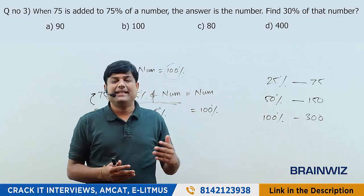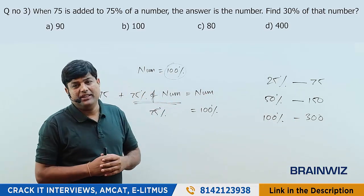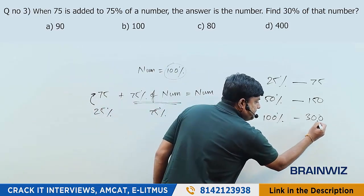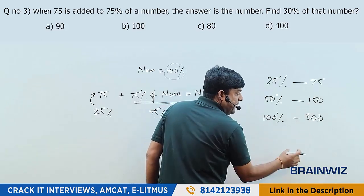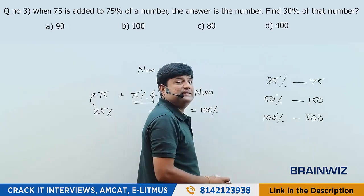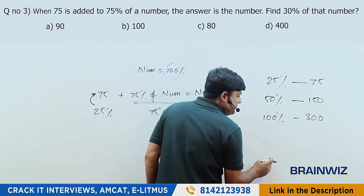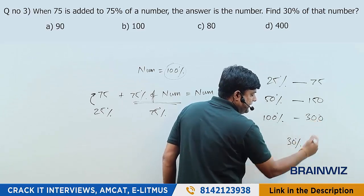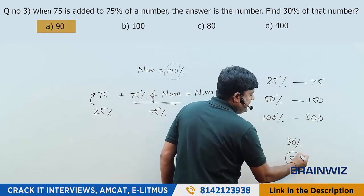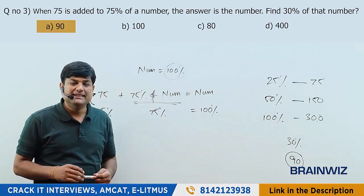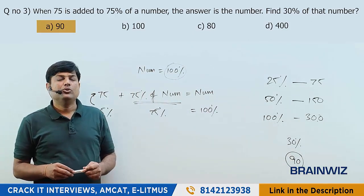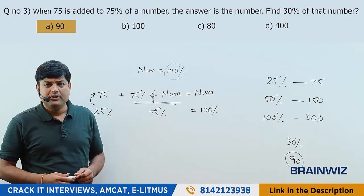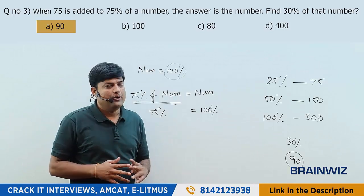He's not asking for the number — he's asking what is 30% of the number. When 100% is 300, then 10% is 30. So 30% will be 90. The answer is 90. That's how we do it, and now let's change the question type and learn more.